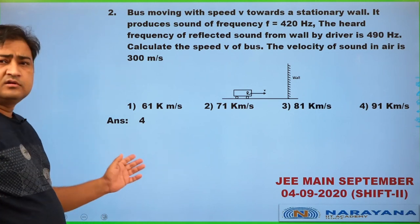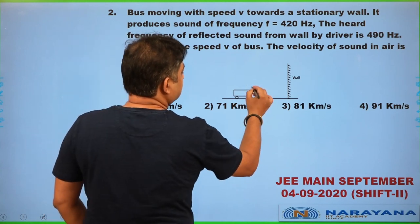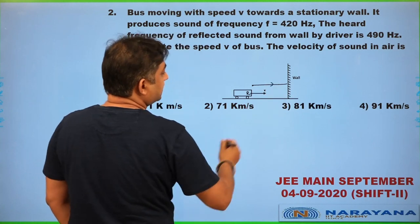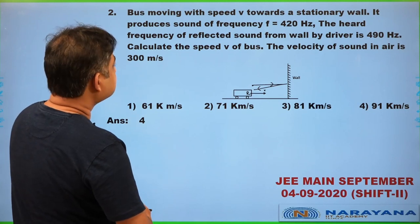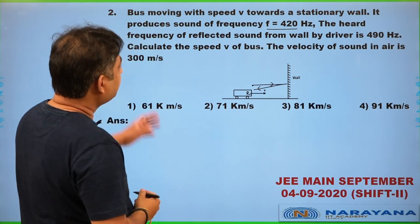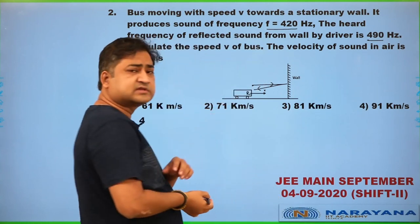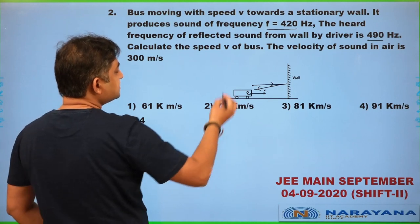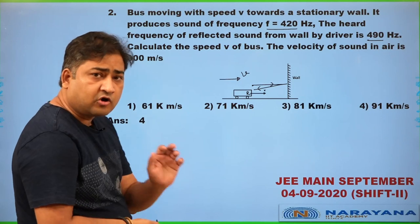This question is based on the Doppler effect. There is sound getting emitted by a car; this sound propagates towards a wall, gets reflected back, and is received by the receiver. The actual frequency is 420 Hz, and when it is received by the same observer who is the driver of this car, the frequency appears as 490 Hz. The car is travelling with constant speed v towards the wall, and the wall is stationary.